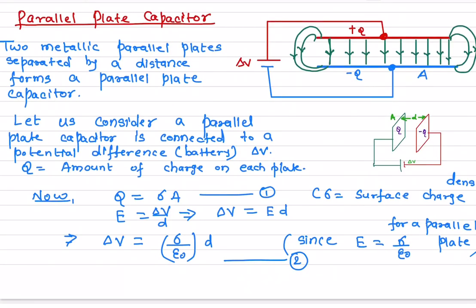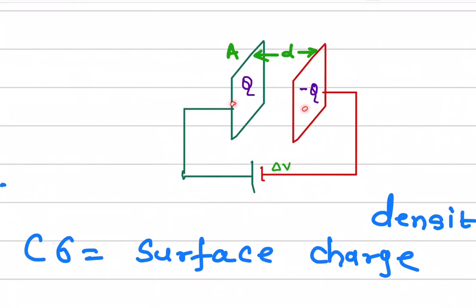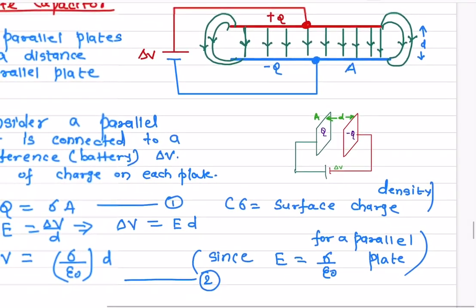In this video I'll talk about the parallel plate capacitor. We will find out what is the capacitance of a parallel plate capacitor. Here we have two plates which are connected to a battery. The potential difference across the battery is delta V, which means the potential difference across the plates of the capacitor is also delta V.